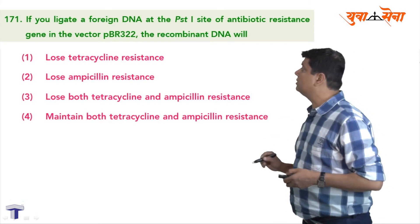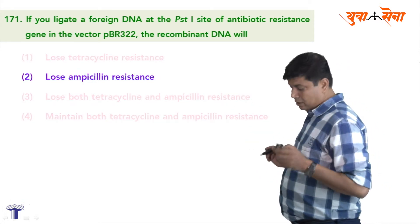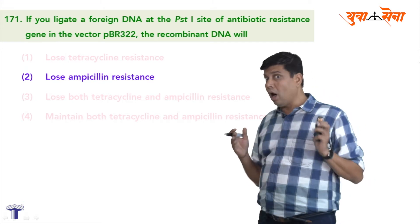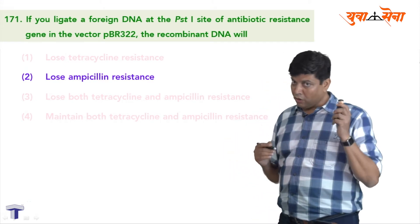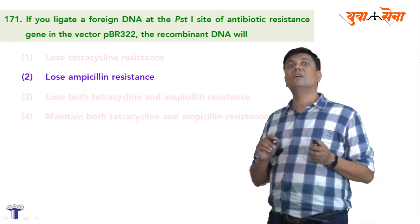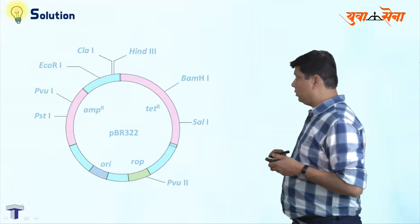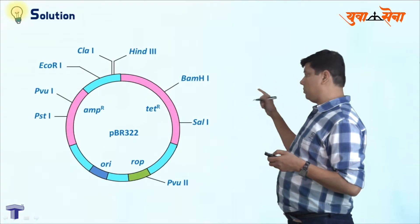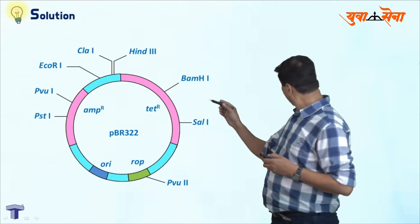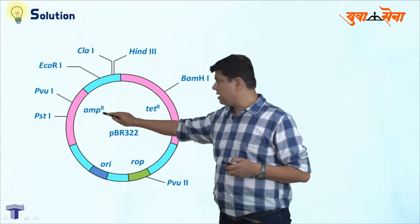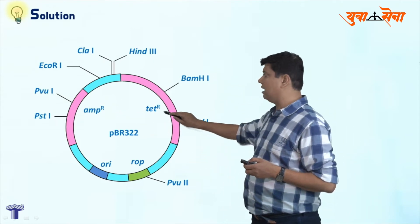The answer is: lose ampicillin resistance. Now how will it lose ampicillin resistance? For that, let us see the structure of pBR322. This is pBR322 — it has two marker genes: the ampicillin resistance gene and the tetracycline resistance gene.